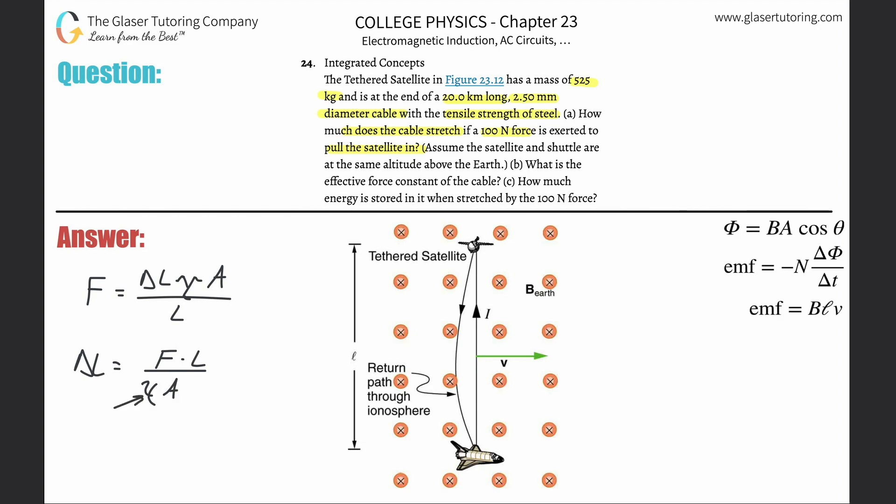You got to look up the Young's modulus for steel. We now know everything basically, we plug it in. So the force here that's applied is going to be 100 newtons of force. The overall length they told us is 20 kilometers, but we need that in meters, so take the 20 and multiply by 1000, that's 20,000 meters.